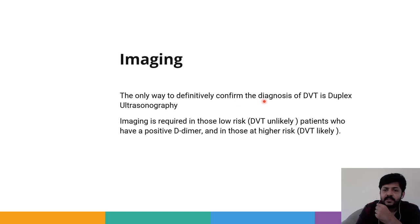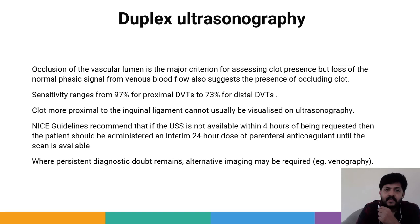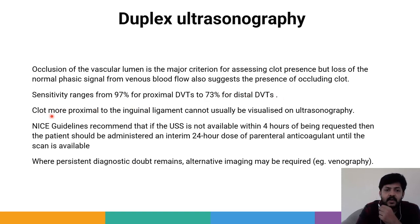The only way to definitively confirm the diagnosis of deep vein thrombosis is duplex ultrasonography. Imaging is required in DVT-unlikely patients who have a positive D-dimer and in those at higher risk (DVT-likely cases). Occlusion of the vascular lumen is the major criterion for assessing the presence of clot. Loss of the normal phasic signal from venous blood flow also suggests occluding clot. Sensitivity of duplex ultrasonography ranges from 97% for proximal DVTs to 73% for distal DVTs.